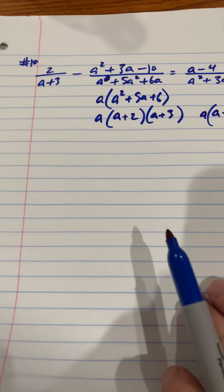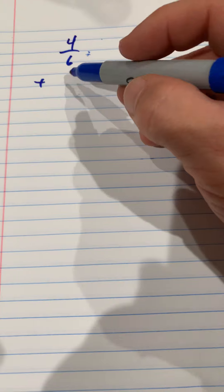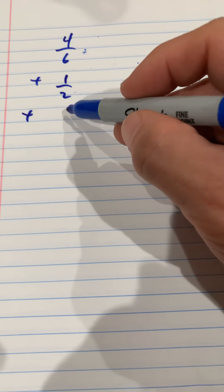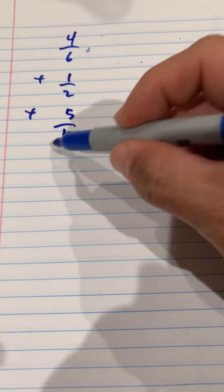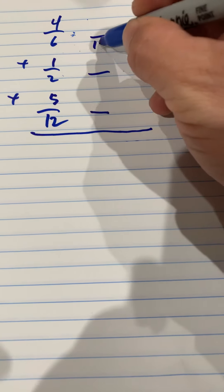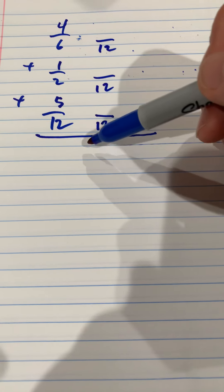It's kind of like if I had 4/6 plus 1/2 plus 5/12, and I wanted to add those together and find the least common denominator. Just by looking at it, you would automatically know that it's going to be 12. Why? Because I can't take 12 and multiply it by something to give me 2, and I can't take 12 times something to give me 6. But I can take 6 times 2 to give me 12, and 2 times 6 to give me 12. So therefore, 12 is going to be my least common denominator.